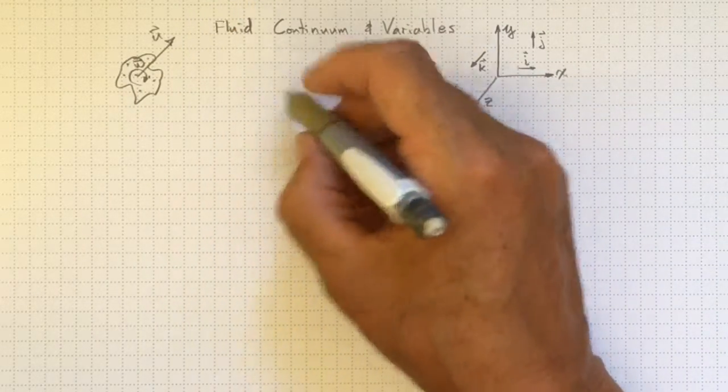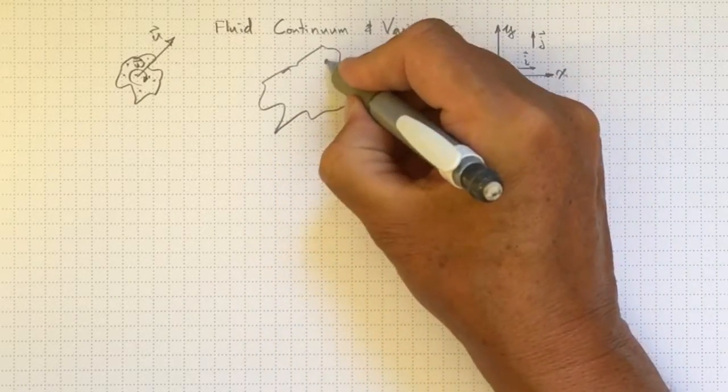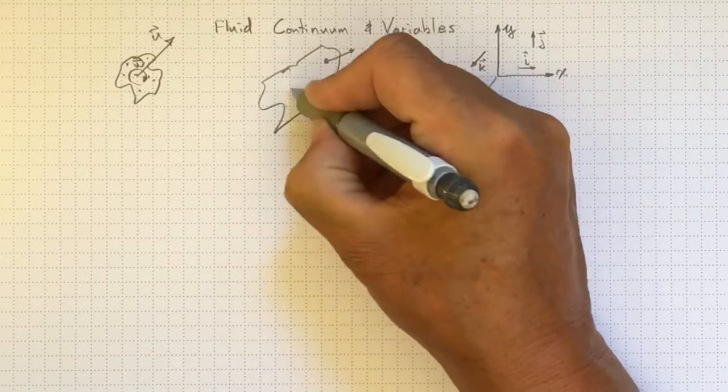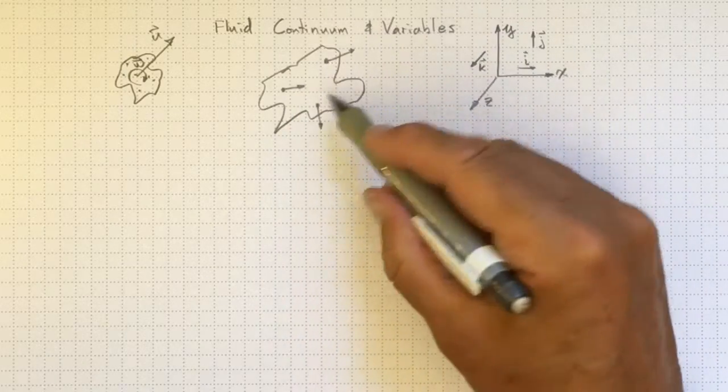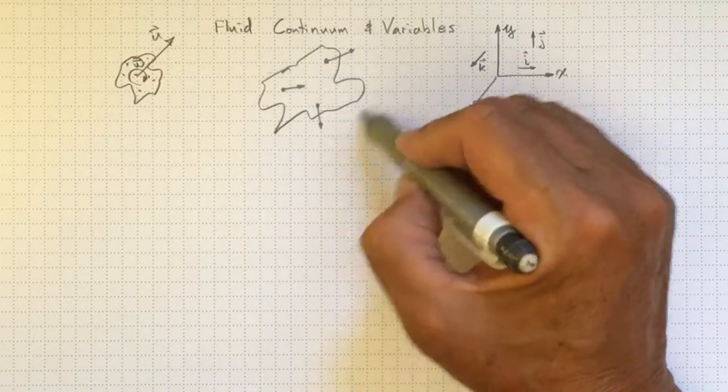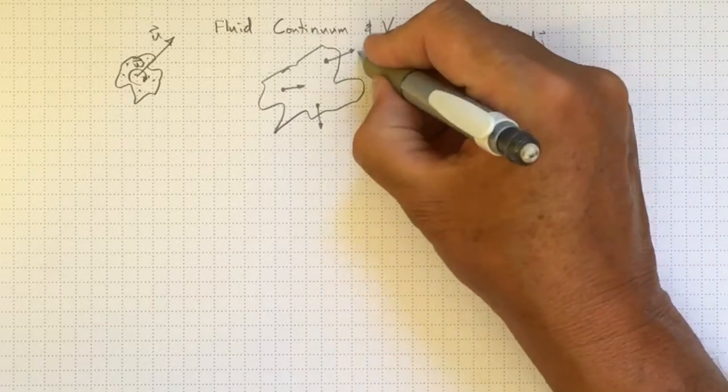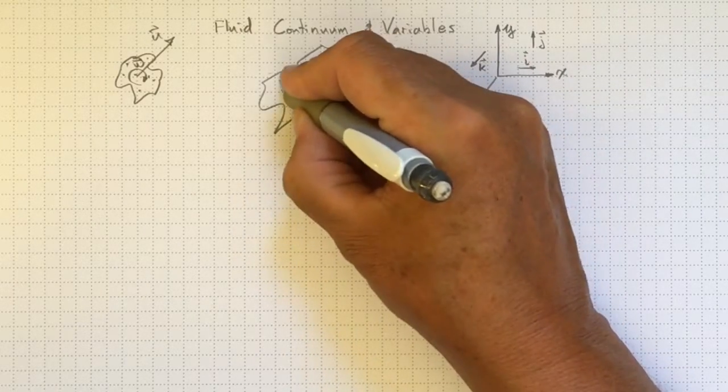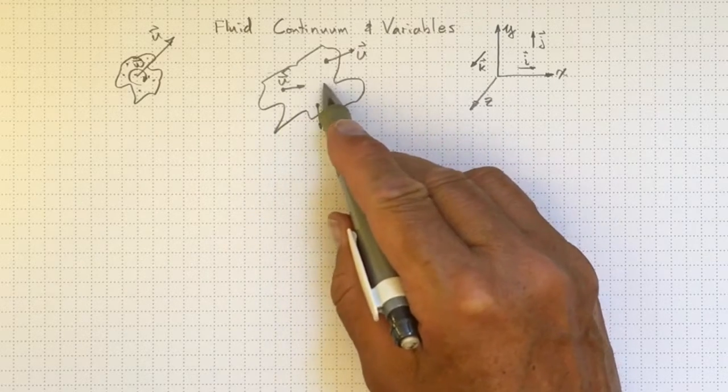On the other hand, in a fluid, we could have the same sort of chunk of fluid and this part might be moving at that velocity, this part might be moving at that velocity, and this part might be moving at that velocity. So we need, and the shape of this chunk of fluid will be changing with time. So we need to be able to describe each of these different velocities separately for each of these different particles, each of these different locations in the continuum.